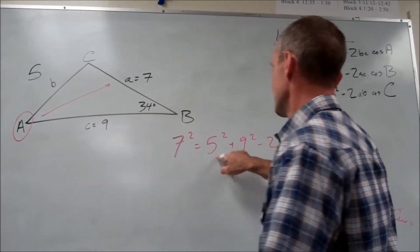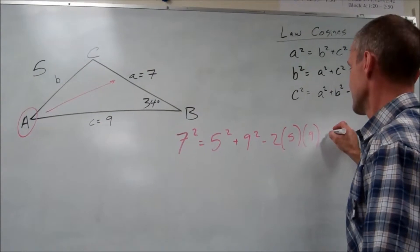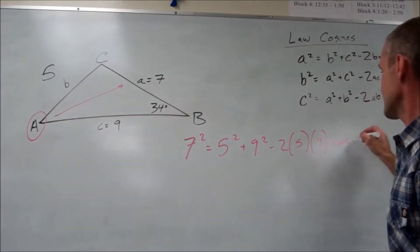So 7 squared equals the other leg squared plus the other leg squared minus 2, these two sides, 5, 9, cosine of the angle opposite side, cosine of angle A.